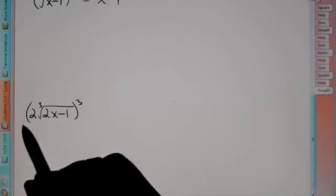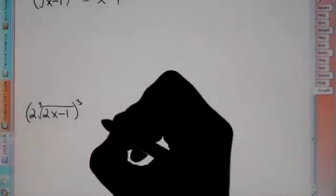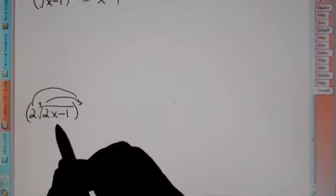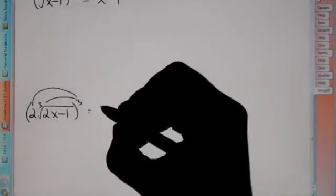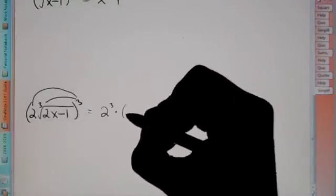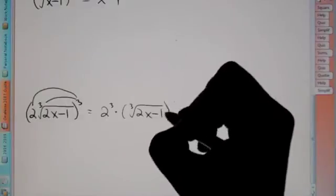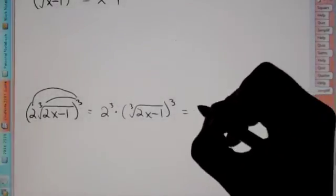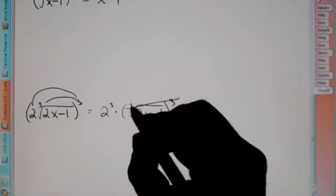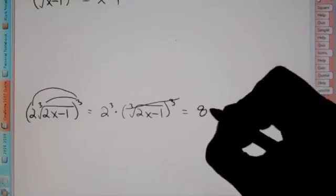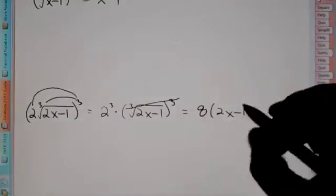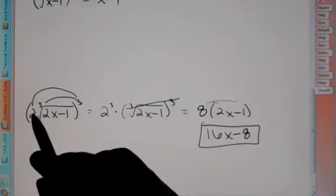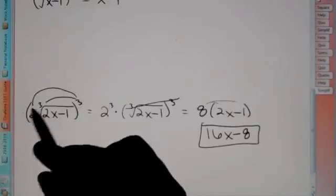Now this problem has a 2 up front — a coefficient in front of the radical. So the power of 3 gets distributed to both the 2 and the cube root, or 3rd root. First, you do 2 to the 3rd: that's 2, 4, 8. Then the 3rd root and the power of 3 cancel out, leaving you with just 2x minus 1. We distribute the 8, so we end up with 16x minus 8 as our answer.